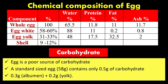Chemical composition of egg — whole egg has 65.5% water, 11.8% fat, 11% ash, and 11.7% egg white, along with yolk and shell components. Egg is a poor source of carbohydrate; a standard egg of 58 grams contains 0.5 grams of carbohydrate (0.3 gram from albumin plus 0.2 gram from yolk).